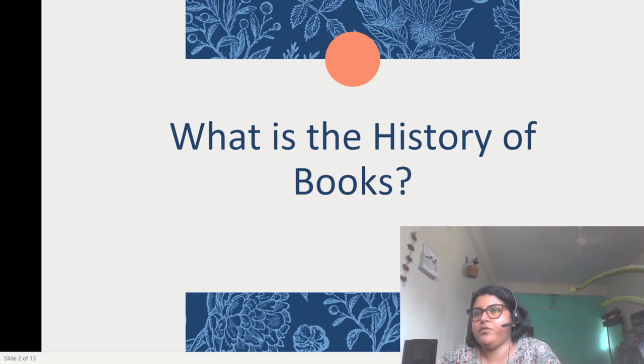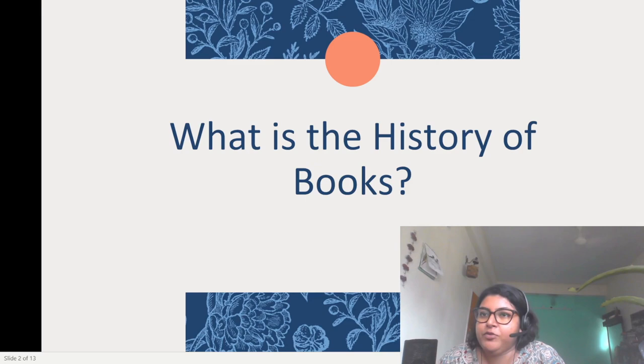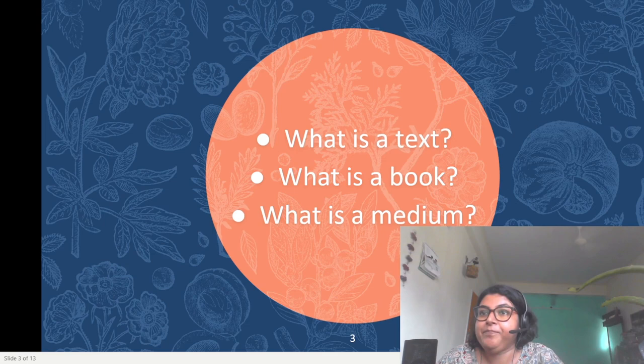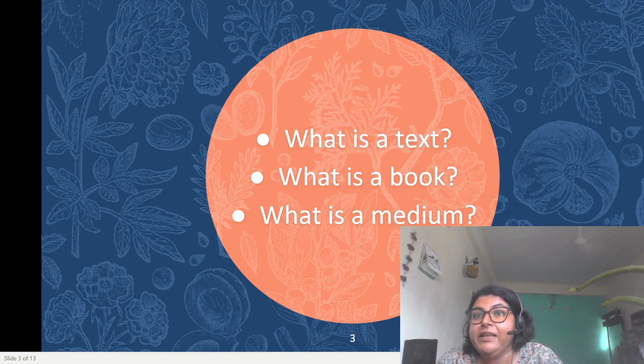Finkelstein and McCleary, in their introduction to the 2005 volume 'An Introduction to Book History,' observe that book historians might be seen primarily asking the following questions. First and foremost, they might ask: what is a text? In their words, a text is a written document which is read, but a text has to have a physical form. This physical form could be anything from a printed book to a Kindle edition of the same.